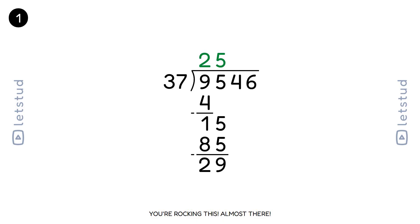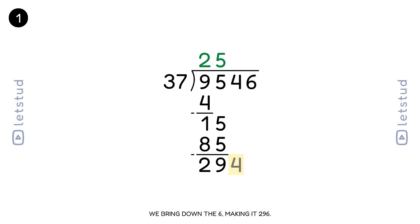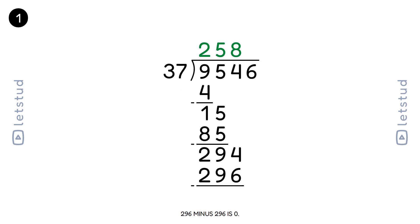You're rocking this, almost there. Time to bring down the next digit, 6, making it 296. 37 fits into 296 eight times. 37 times 8 is 296. 296 minus 296 is 0.